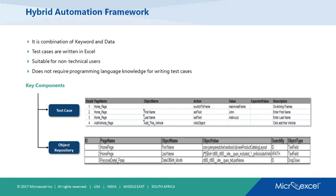I've marked the two key components: test case and object repository. In the Excel, a test step might enter a value like 'John' in the first name field and 'Abelzi' in the last name field, then click an add button. Functions like click object, set text, and switch to frame are your keywords. The values — John, Abelzi — are your data. The object names have a definition behind the scenes in your object repository Excel.